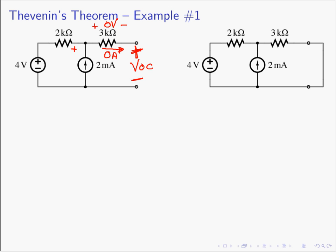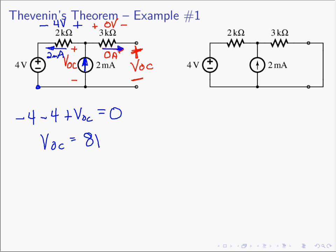VOC is going to be the voltage across the current source. We know we have 2 milliamps flowing up, the current going to the right must be 0, therefore the current going to the left must be 2 milliamps. With 2 milliamps flowing left, passive sign convention gives a 4 volt drop across that resistor. Writing KVL: minus 4 across the 2kΩ resistor, plus VOC equals 0. Solving, VOC equals 8 volts.